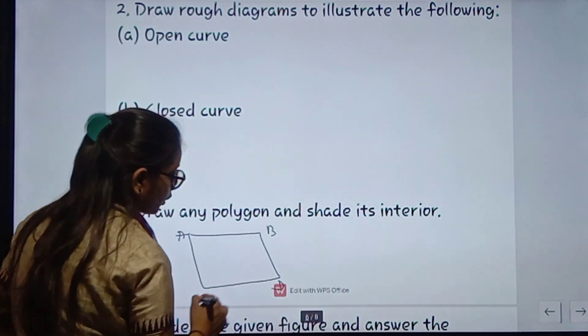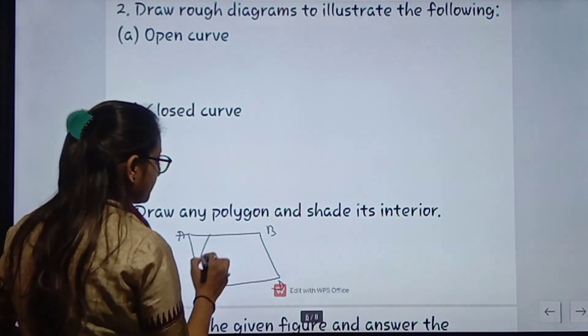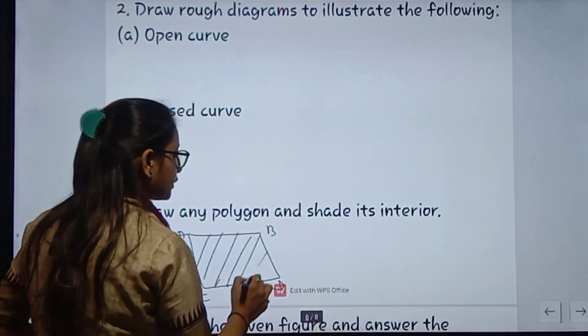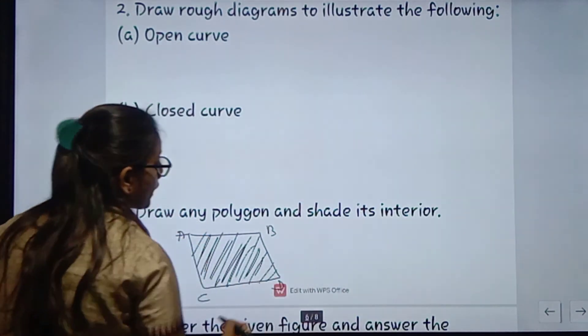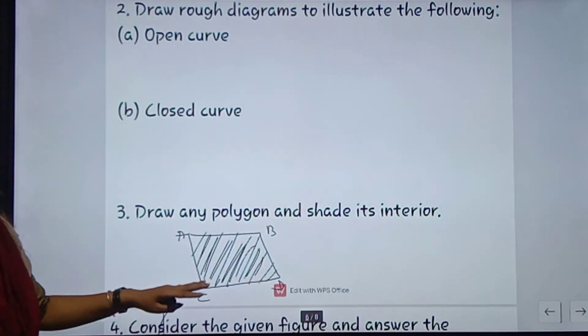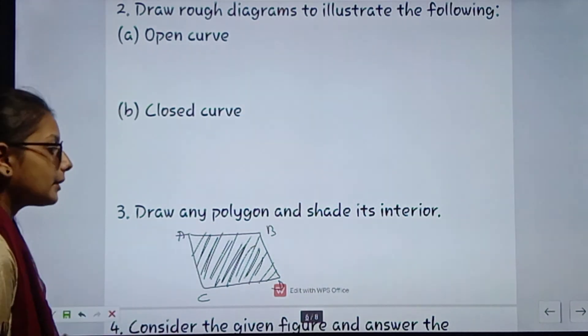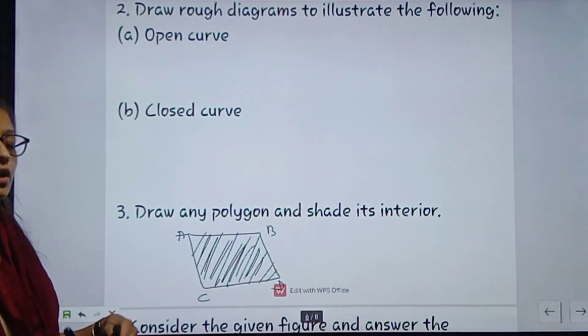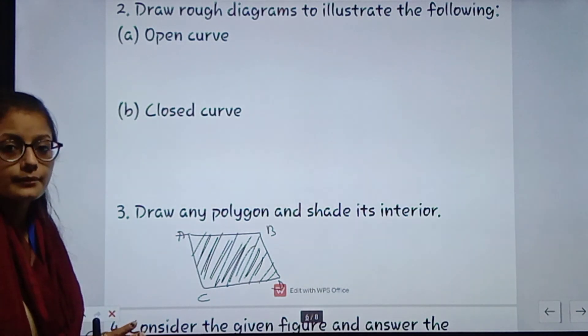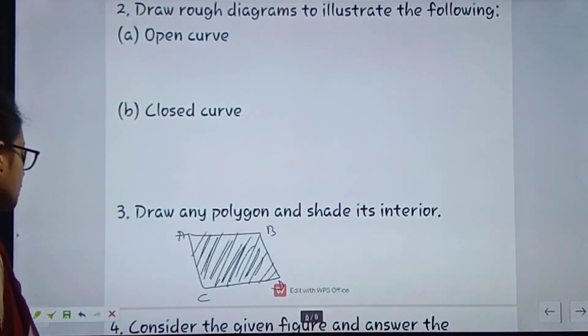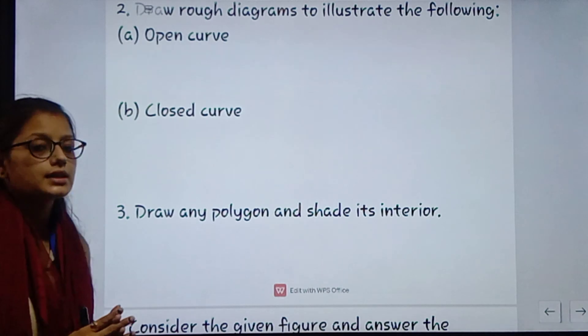Shaded means interior part ko shaded karna hai, jo andar wala part hai usako shaded karna hai. So diagram aapko bita geometry ki notebook mein jo blank paper hota hai uske upar draw karne hain, aur uska jo answer hoga wo lining wale paper par aap dikhoge. Ok, next question we will discuss in the next class. Thank you so much.